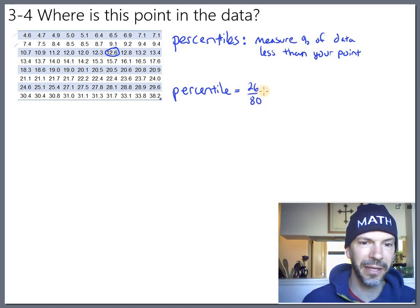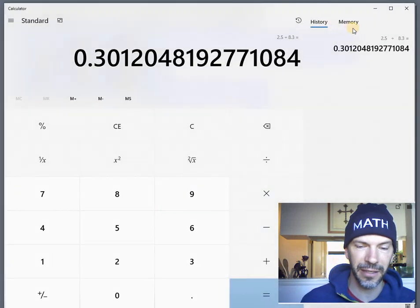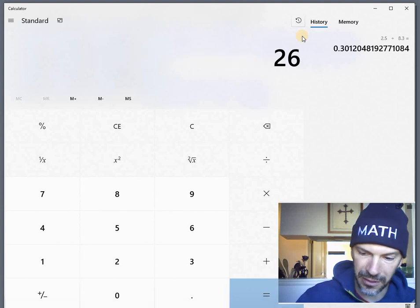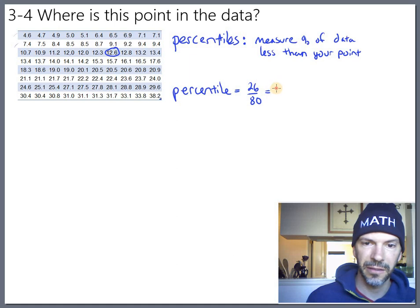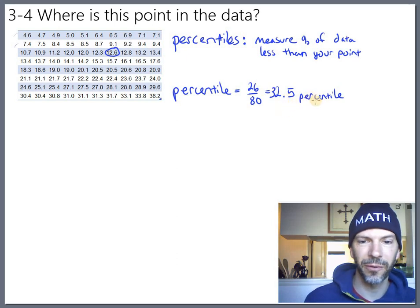So 26 out of the 80 are less than him, and that's all the percentile is. Although usually we turn it into an actual percent, so 26 divided by 80. Let's get the calculator back. 26 divided by 80, that's 32.5. So his percentile is the 32.5 percentile. Sometimes they'll round that to the nearest whole number so you could call that 33, but it's fine to have a decimal in there too.